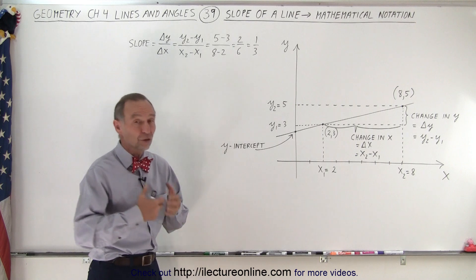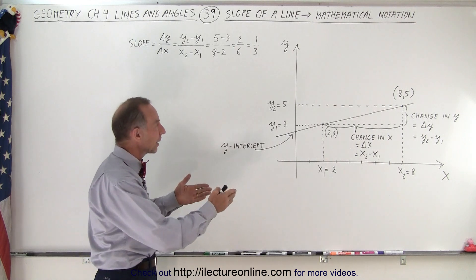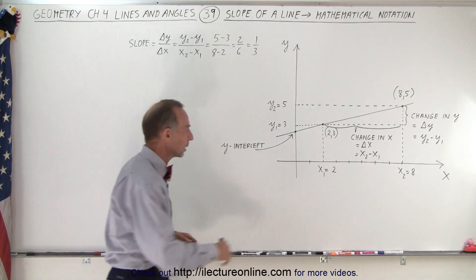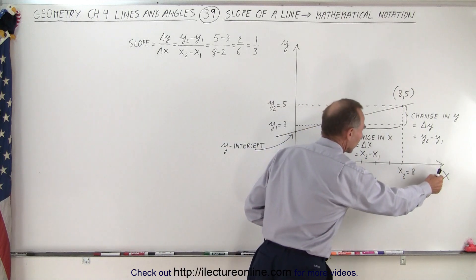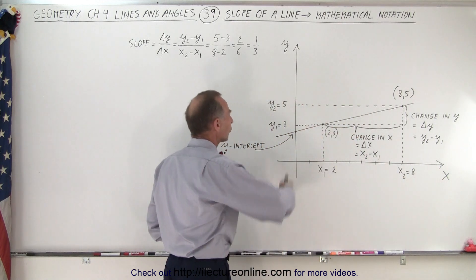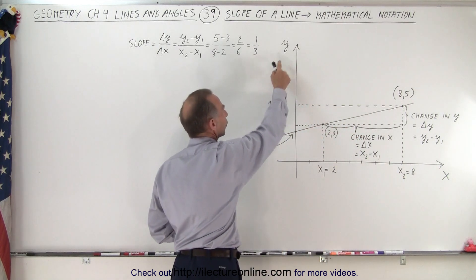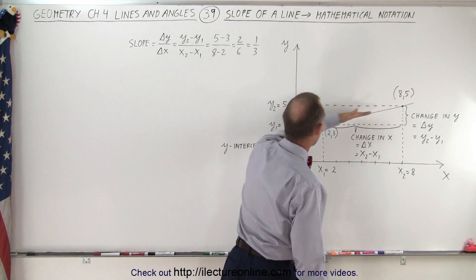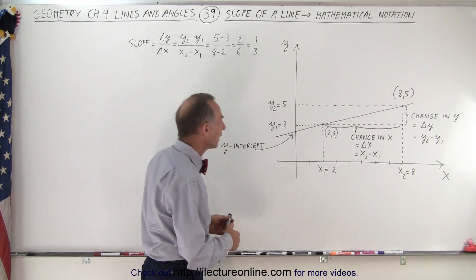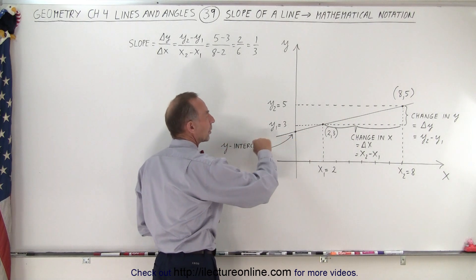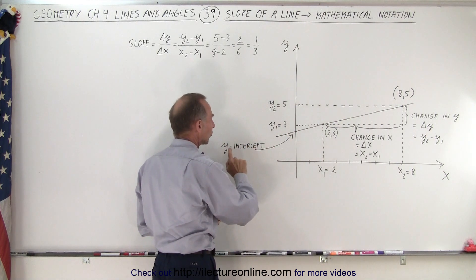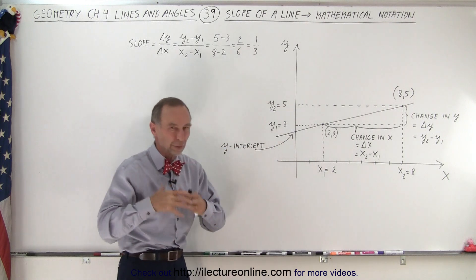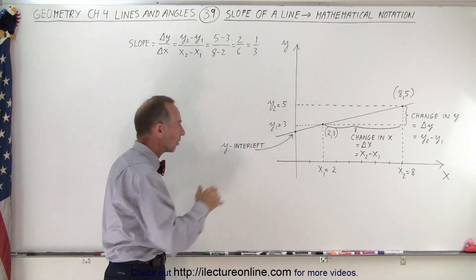So typically when we talk about the slope of a line, we place the line on an x-y plane. Here the horizontal axis is considered the x-axis, the vertical axis is considered the y-axis. And then we drew a line on that x-y plane. The point where the line crosses the y-axis is usually called the y-intercept, and we are going to use that at some later time.